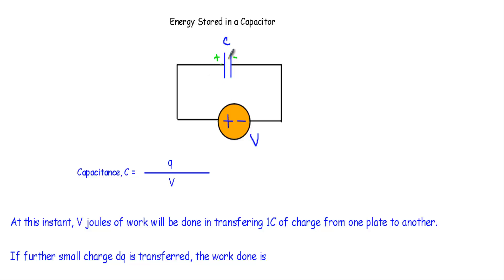Therefore this side of the capacitor will be positively charged, and this source will supply electrons at this terminal. As it receives electrons from the negative terminal, it will get negatively charged. Now let me talk about how the energy is stored in a capacitor due to the charging of the capacitor.